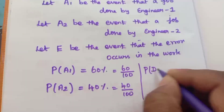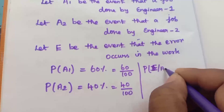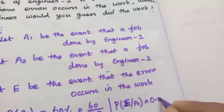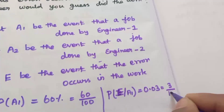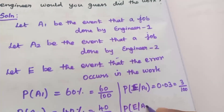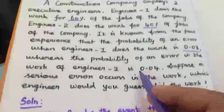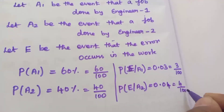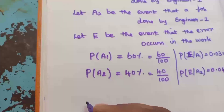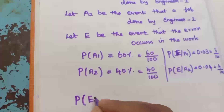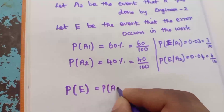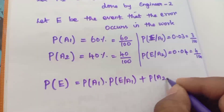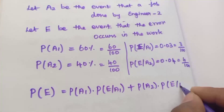Next, probability of E given A1 is 0.03, which we can write as 3/100. Probability of E given A2 is 0.04, which is equal to 4/100. Now, to calculate the total probability of E, we use: probability of A1 times probability of E given A1, plus probability of A2 times probability of E given A2.